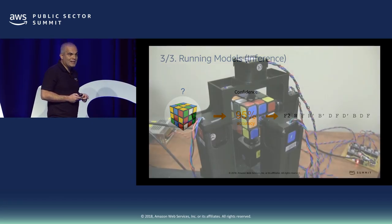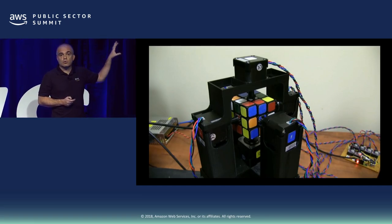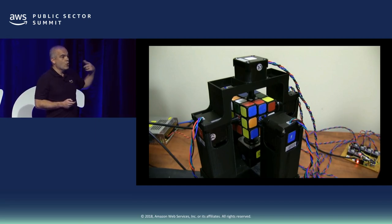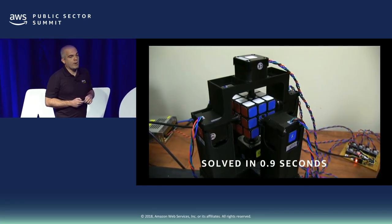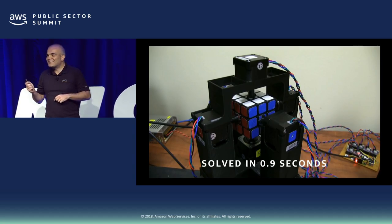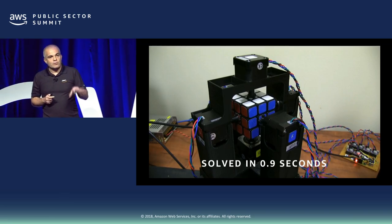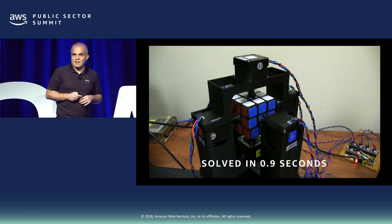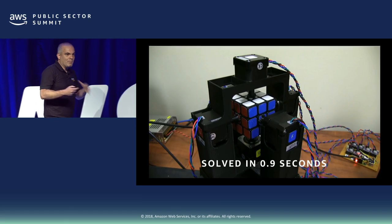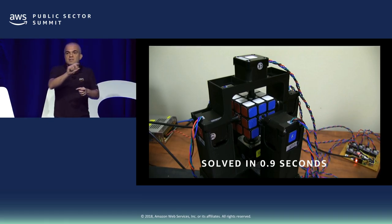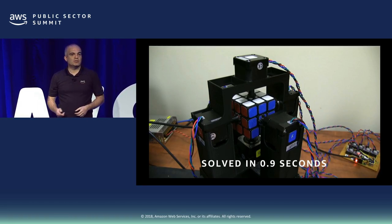Let's see this working for real. I have a device here with a Rubik's Cube, using the same concepts I described — the device, the data, you train the model. When you run this model, you get results in 0.9 seconds. That's real machine learning working. Just to have a sense: the world record is about 30 seconds from a guy in Korea. Most people take much longer. With machine learning, you can bring your organization to a completely different level.